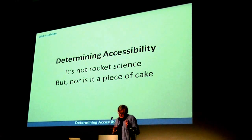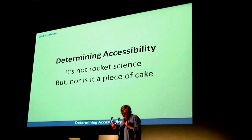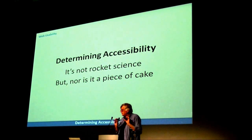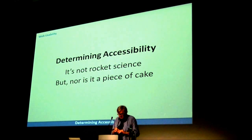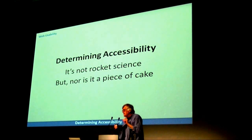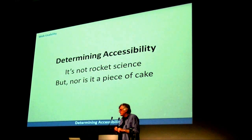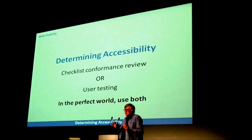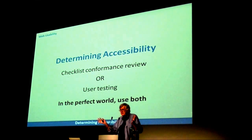Working out whether a page is accessible is not rocket science, but it's not a piece of cake either. With a bit of knowledge and a few tools, it's pretty easy to get an idea of whether a site will comply with Web Content Accessibility Guidelines Version 2, or WCAG 2. However, determining the likely implications of accessibility problems and what to do about them is a little more complicated and takes more experience. Some of you may have worked on sites that have been roundly condemned for a couple of missing alt texts.